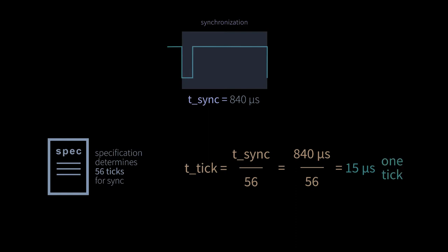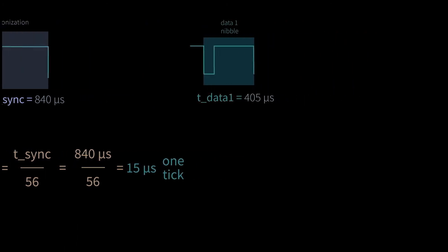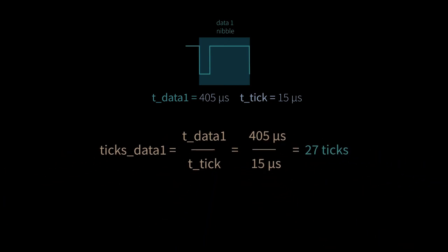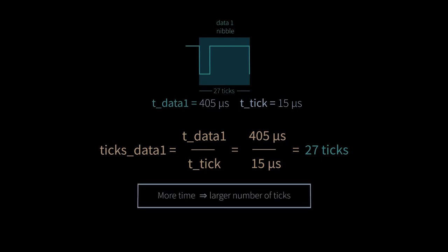Let's have a look at how data 1 is coded. We already measured the time value of 405 microseconds for data 1. To calculate the number of ticks for data 1, we divide the time value for data 1 of 405 microseconds by the time per tick of 15 microseconds. Accordingly, we receive a value of 27 ticks for data 1. Overall, the longer the measured time for a data nibble, the higher the amount of ticks.